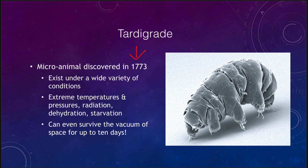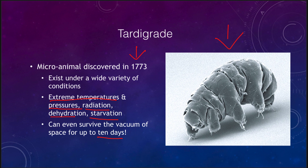One of those extremophiles is what we call the tardigrade. Tardigrades were discovered back in the 1700s and exist under a very wide variety of conditions — this is an extremely enlarged image of one seen here. They can exist under extreme temperatures hot or cold, high or low pressures, radiation, dehydration, and starvation. They have even been tested and shown to survive in the vacuum of space for up to 10 days, which seems to show that life is very hardy and very good at finding a way to survive.